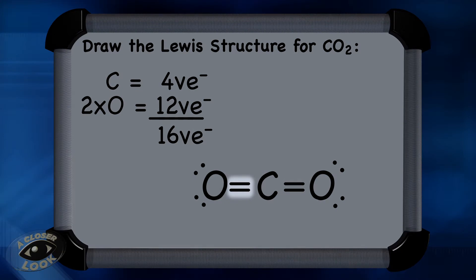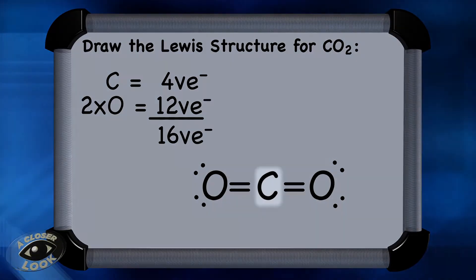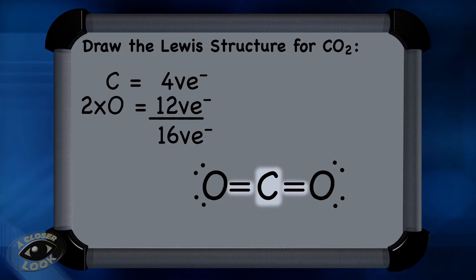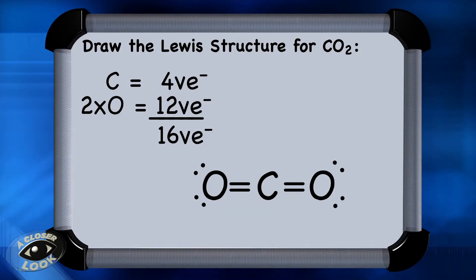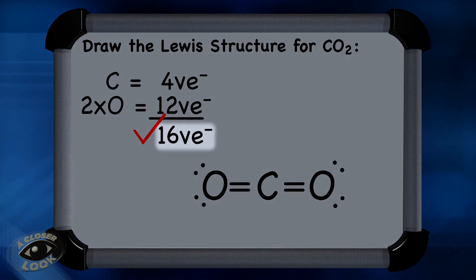Using double bonds: 2, 4, 6, 8, 10, 12, 14, 16 — that's exactly what is needed. Carbon now has 2, 4, 6, 8 electrons, making it stable. This oxygen has 2, 4, 6, 8, and this oxygen also has 2, 4, 6, 8. There are 16 electrons placed in the Lewis structure, matching the total from the initial tally.